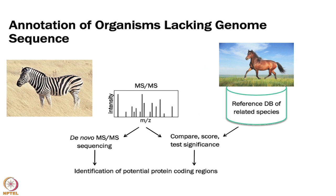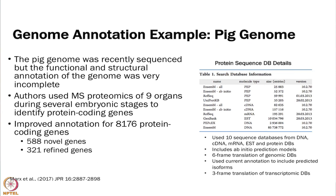If you want to study an organism that has no genome sequence — for example, zebras do not have their genome sequenced — you could use a related species like a horse, which is close enough, and try to find related proteins using that sequence. You can also do some de novo sequencing to supplement this.